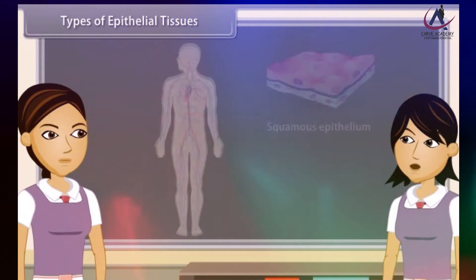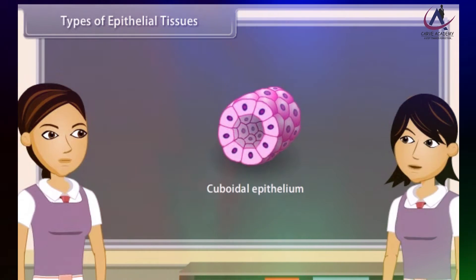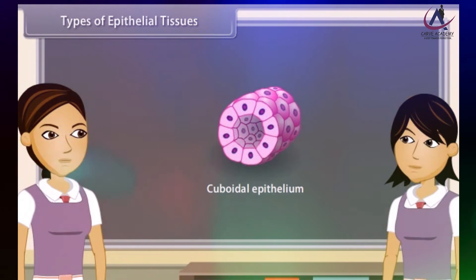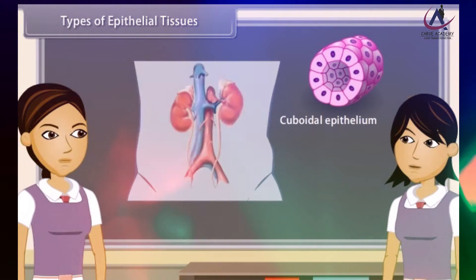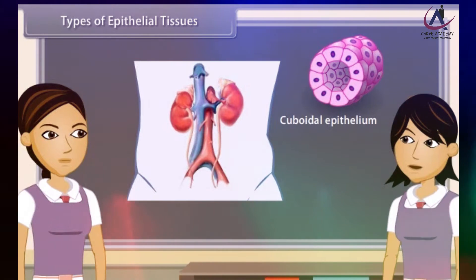In cuboidal epithelium, cells are cube-like. They appear square in section but appear hexagonal on the free surface. It is found in kidney tubules, thyroid vesicles, salivary, sweat and exocrine glands.